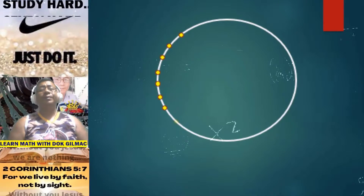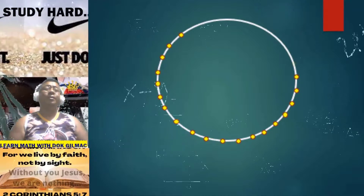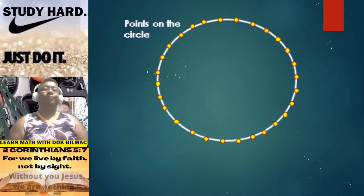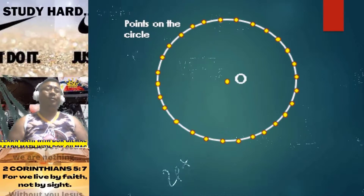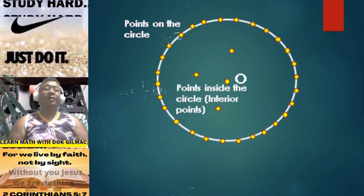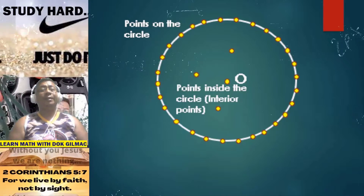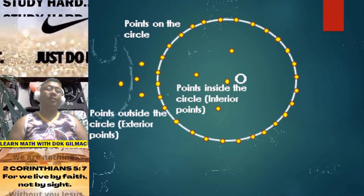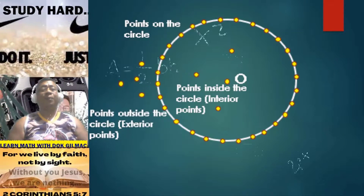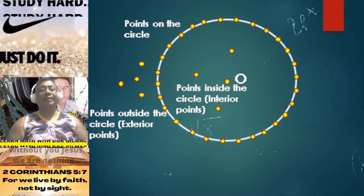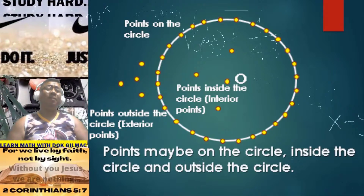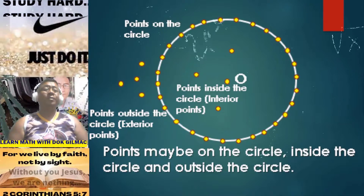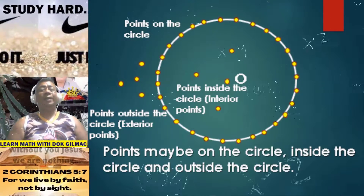Diameter is also equal to two times R. Consider a circle here. We have a set of points on the circle. Point O and other given points inside the circle — these are what we call the interior points. And the points outside the circle are what we call the exterior points. So points may be on the circle, inside the circle (which are interior points), or outside the circle (which are exterior points).